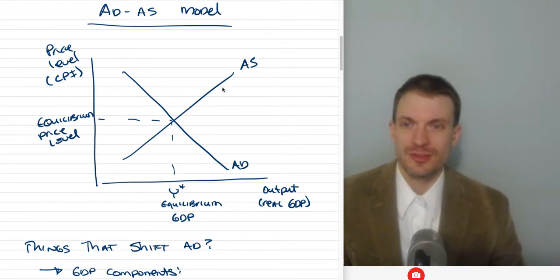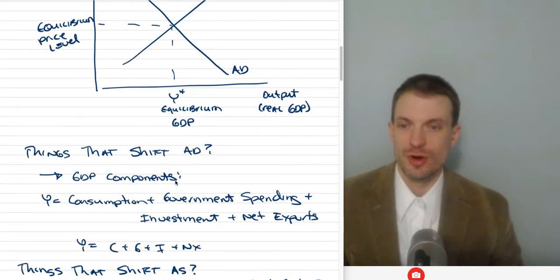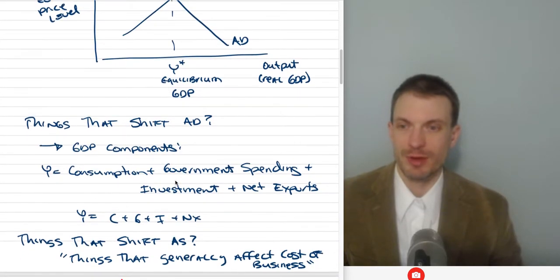This is our equilibrium price level. This is our equilibrium GDP. This would be the full employment outcome when we're in equilibrium with no recession and no economic expansion.